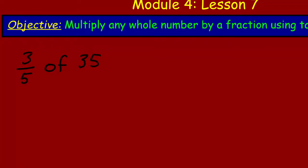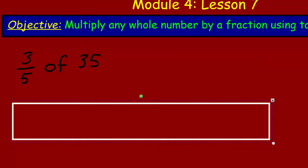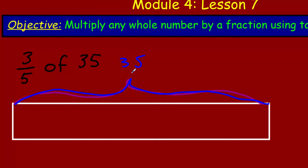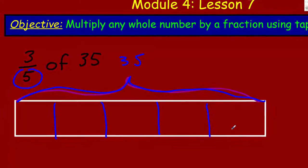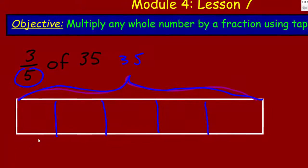I'm going to bring in the tape diagram. We have 35 — that's our whole. Now, what are we going to do? We need to split it into fifths because of the denominator. So there's one, two, three, four, and five — we now have fifths.